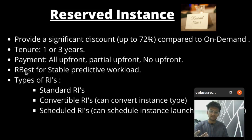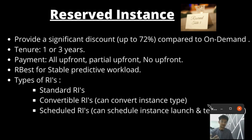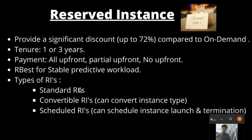Reserved instances are best for stable, predictive workloads that you know in advance. Because you need to select a specific instance type, there are three types of reserved instances: standard reserved instances, where you cannot change your instance type; convertible reserved instances, where you can convert your instance type — for example from T2 micro to T2 small; and scheduled reserved instances, where you can schedule your instances, for example every Sunday or every day at 5 o'clock, for one or three years.